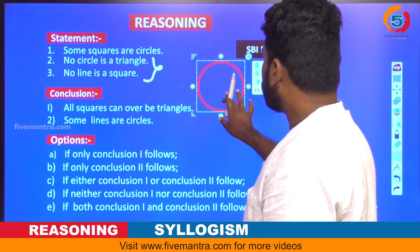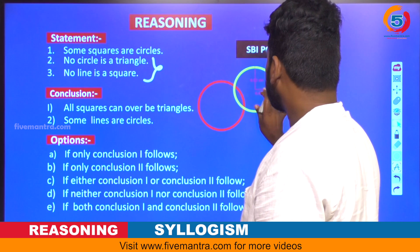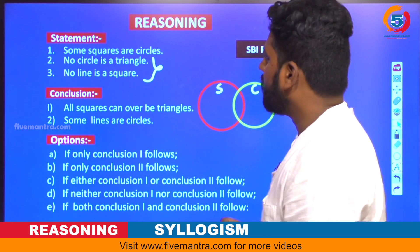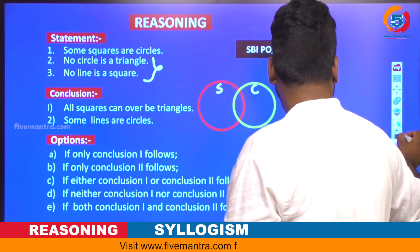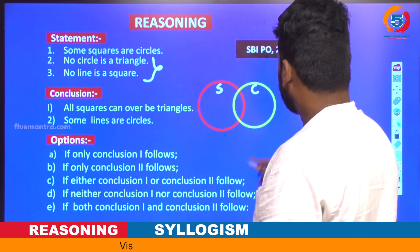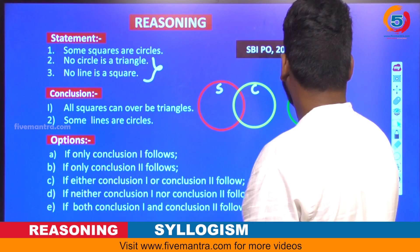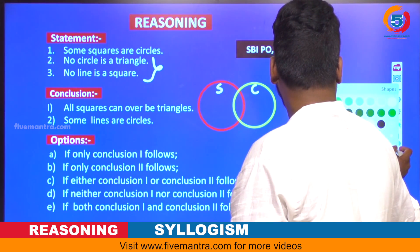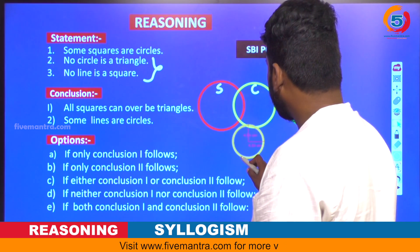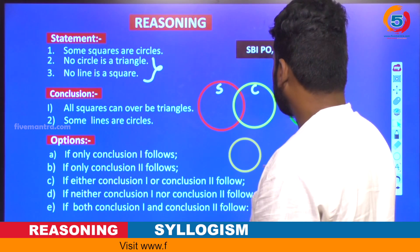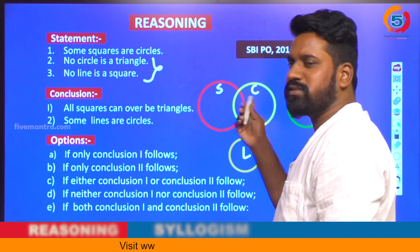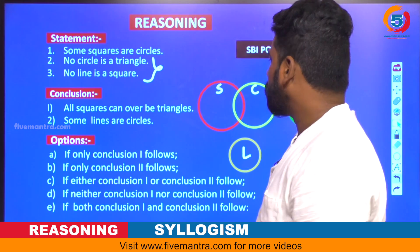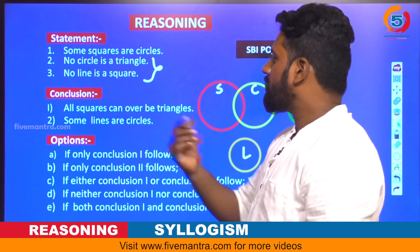Let us draw the diagram. Some squares are circles — suppose this is square and this represents circles. Next, no circle is a triangle — suppose you can take here no circle is a triangle. And last, no line is a square — take one more circle, so I am placing the line here. This is the exact diagram for the given three statements.